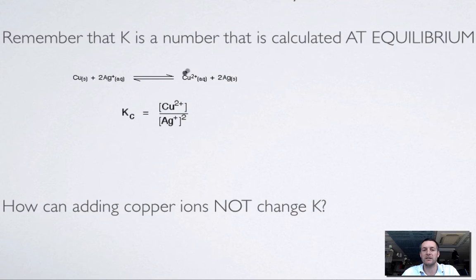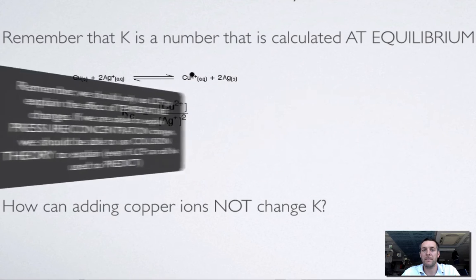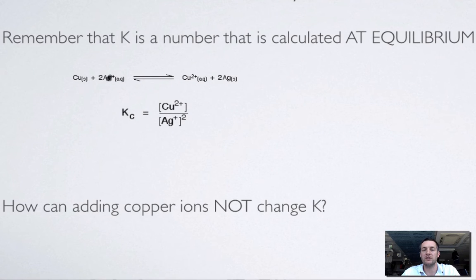Le Chatelier says that if we increase this, the system will try and reduce it, so it will move left. We ought to be able to say that as we increase the concentration of this, the chances of it colliding with silver increases, and so the backward reaction increases. The forward reaction is unaffected, and so the backward reaction is favoured, and so we'll start to use copper up, and we'll start to produce silver instead.